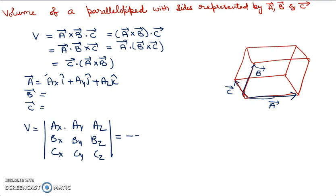Notice here that I have not written i, j, k caps. Actually if you write them, you first get the cross product, and then you have to take the dot product separately. By using this method — removing the i, j, k caps and directly writing ax, ay, az, bx, by, bz, cx, cy, cz — the entire calculation is done in one step.